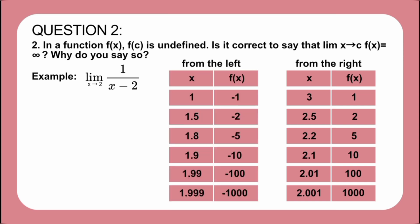Observing the table of values, as x approaches 2 from the left through values less than 2, f of x kept on decreasing, becoming more negative. As x approaches 2 from the right through values greater than 2, f of x kept on increasing on the positive side. The two values are unequal — one is negative and one is positive — so the limit of 1 over x minus 2 as x approaches 2 does not exist, because it is undefined.